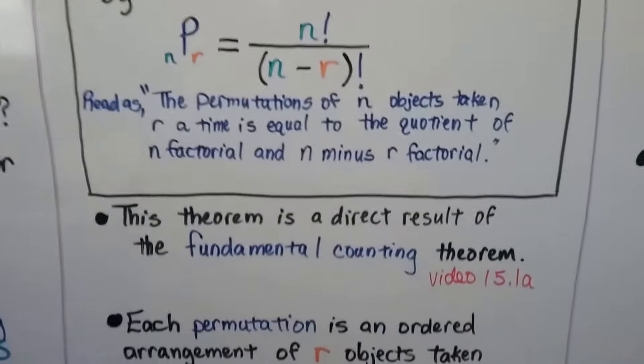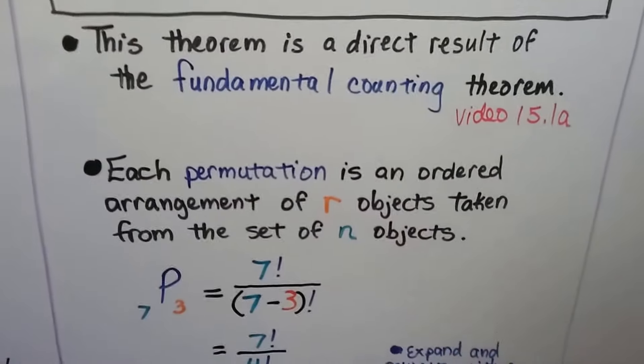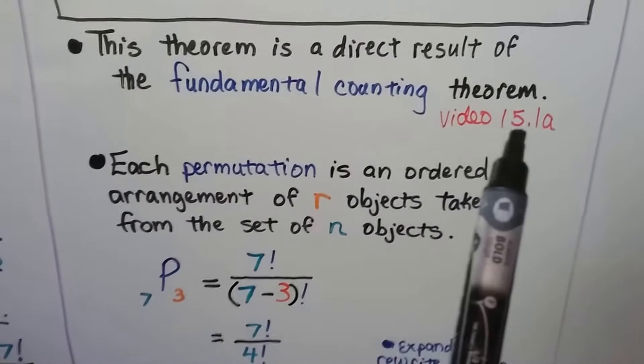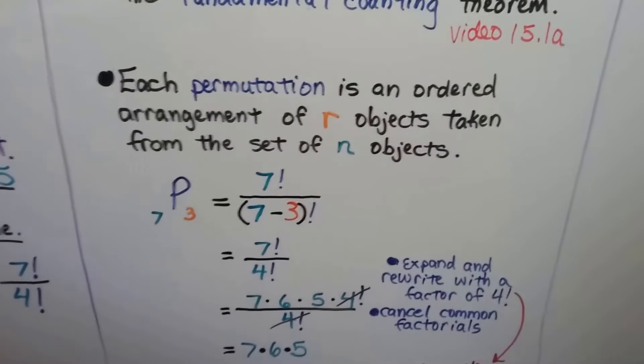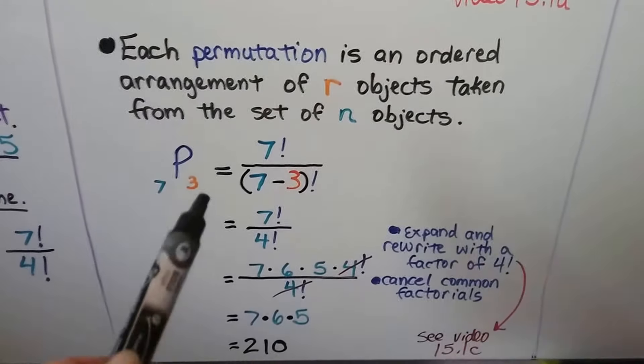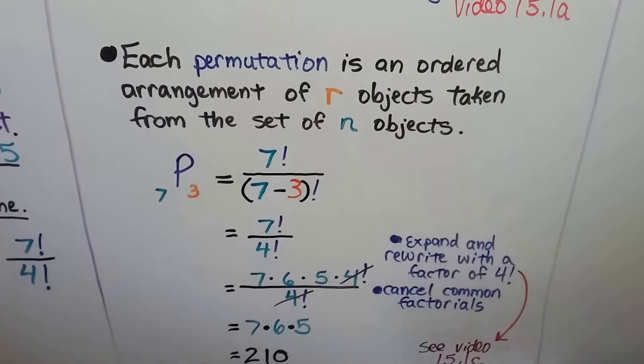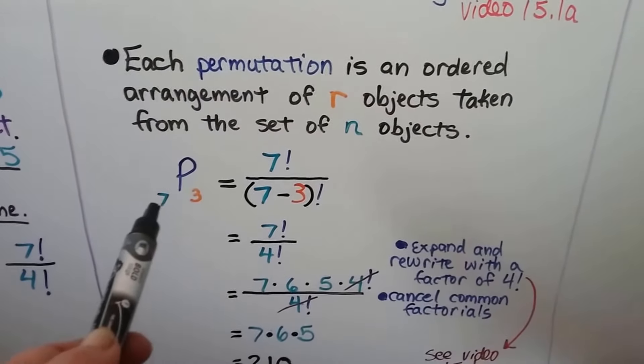This theorem is a direct result of the fundamental counting theorem. We talked about the fundamental counting principle in 15.1a. Each permutation is an ordered arrangement of r objects taken from the set of n objects.